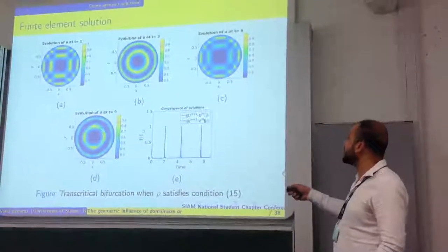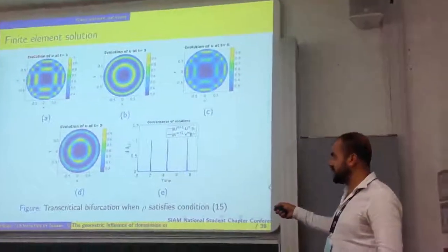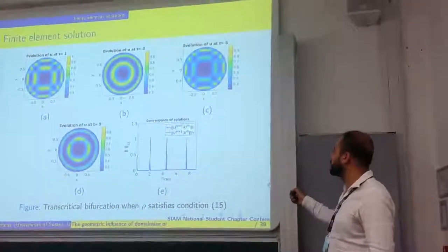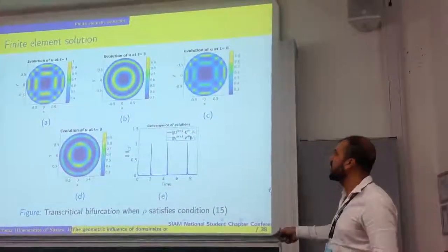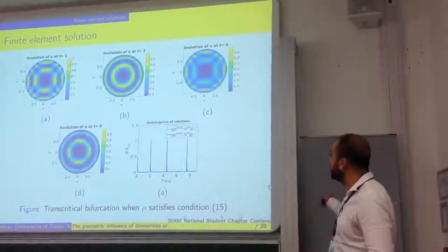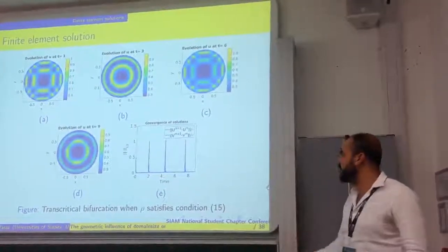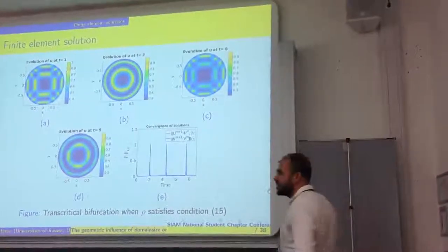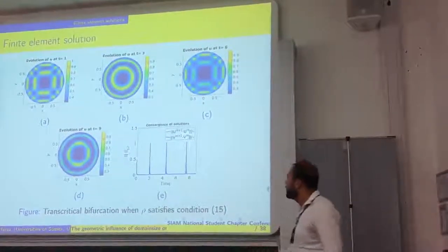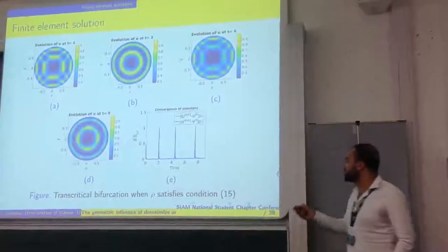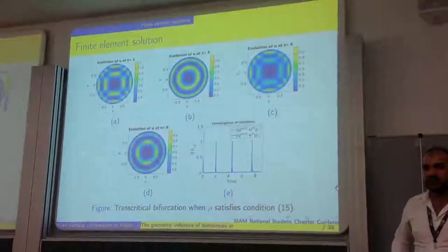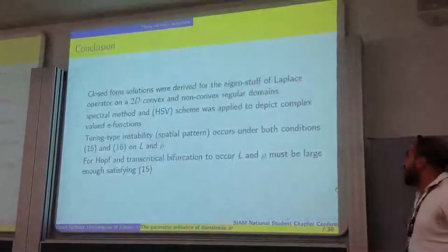We see the angular spots become angular stripes, then back to spots, back to stripes. If you continue it would keep happening, but it is quite computationally costly, so that was probably the maximum of my limitations for now.